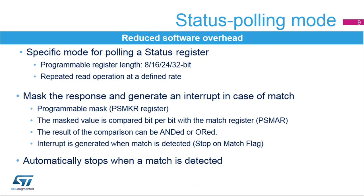A specific mode has been implemented in the Quad SPI interface to autonomously poll the status registers in the external flash memory. The Quad SPI interface can be configured to periodically read a register in the external flash memory. The returned data can be masked to select the bits to be evaluated. The selected bits are compared with their required values stored in the match register. In ANDED mode, if all the selected bits are matching, an interrupt is generated. In ORD mode, if one of the selected bits is matching, an interrupt is generated.